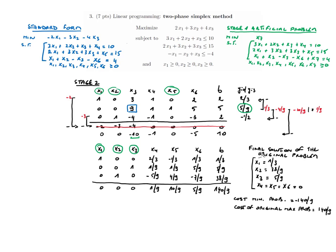We perform elementary operations to create zeros above and below the pivot, multiplying the pivot row by the inverse of 9. After these operations, we obtain the final tableau in which all reduced costs are non-negative. This means we have found the optimal solution of the original problem.